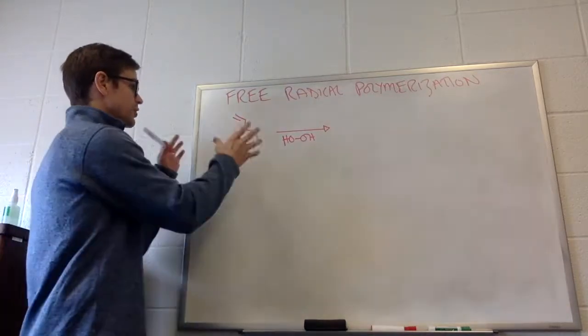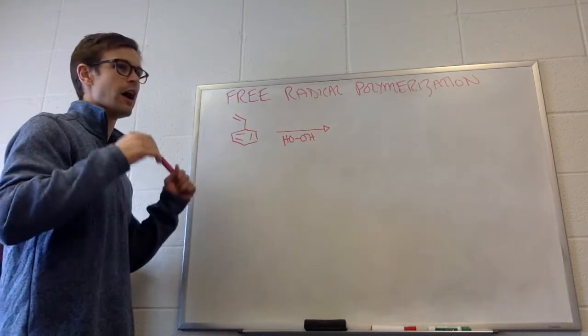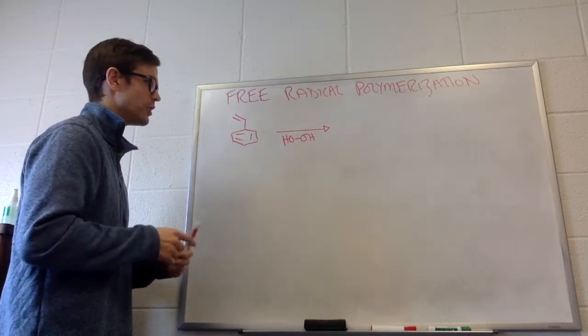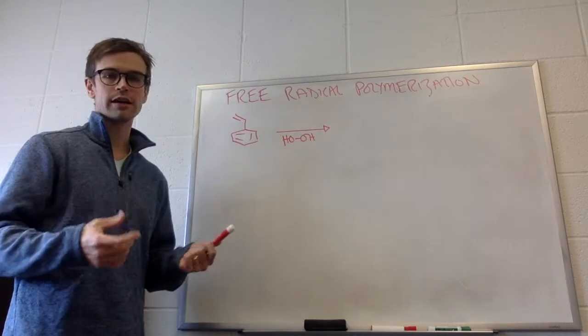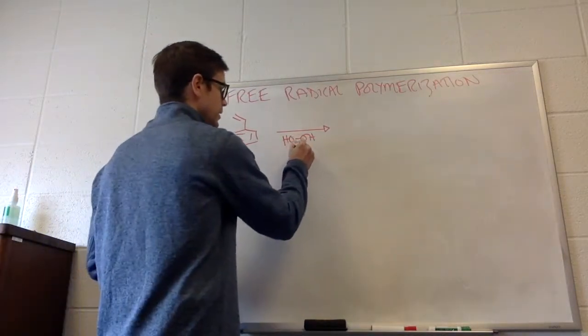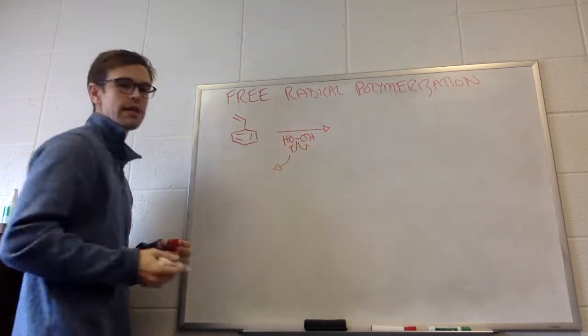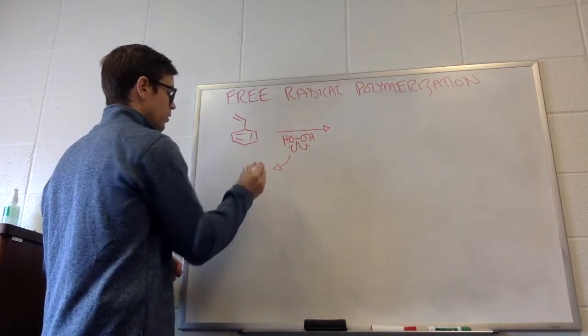So this reaction is going to be a free radical polymerization. How is it going to initiate? Let's think back to the last reaction we learned about peroxides and how they initiate. Oh yeah, peroxides, the oxygen-oxygen single bond, really weak. So the initiation step here is just going to be the breaking of that bond homolytically to make OH radicals.